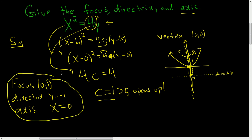Key point: always take this coefficient and set it equal to 4c — that's how you find c. If c is positive, it opens up; if c is negative, it opens down. The focus is the absolute value of c units away from the vertex, and it's inside the parabola — the parabola always opens towards the focus. The directrix is behind it. I hope this helps someone out there who's working on parabolas.